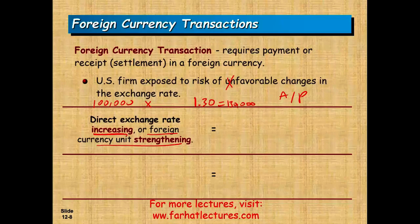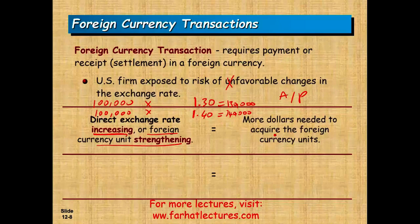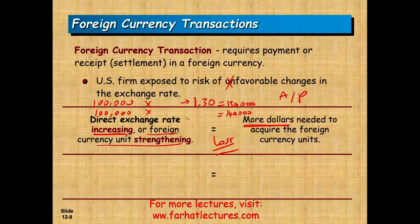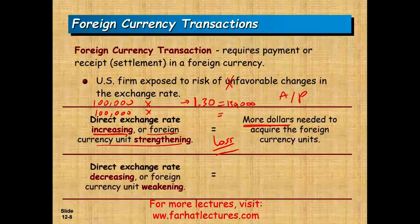If the foreign currency strengthens and you now need $1.40 to buy one euro, then 100,000 euros costs $140,000 — more dollars are needed to acquire the foreign currency. That means you are at a loss. Conversely, if the direct exchange rate decreases, the euro drops to $1.25, so 100,000 euros only costs $125,000. The foreign currency weakened, you need fewer dollars, and therefore you are at a gain.